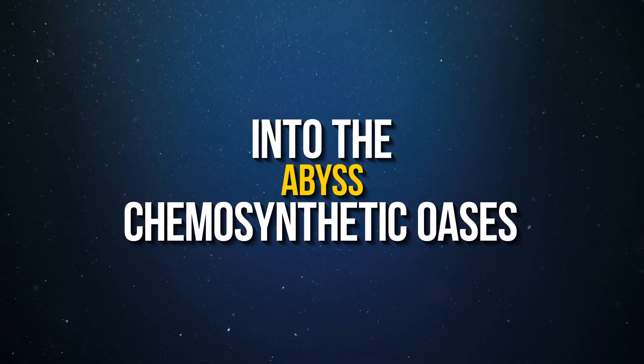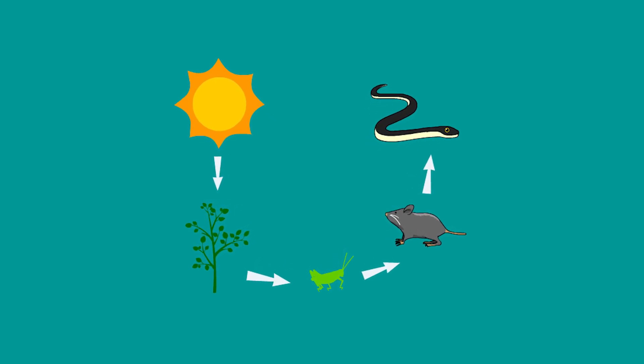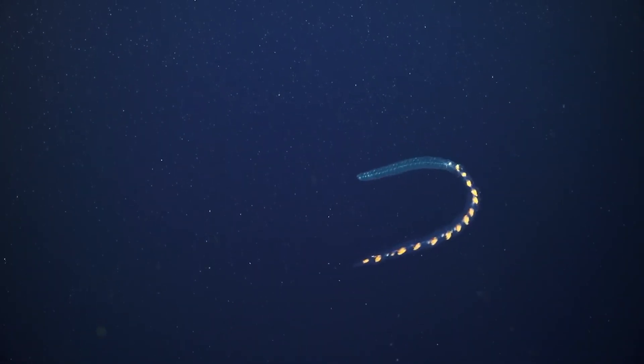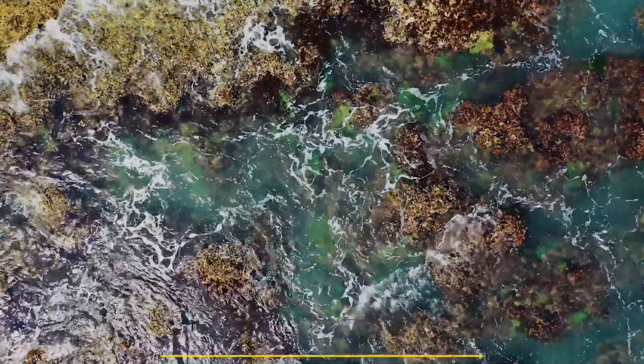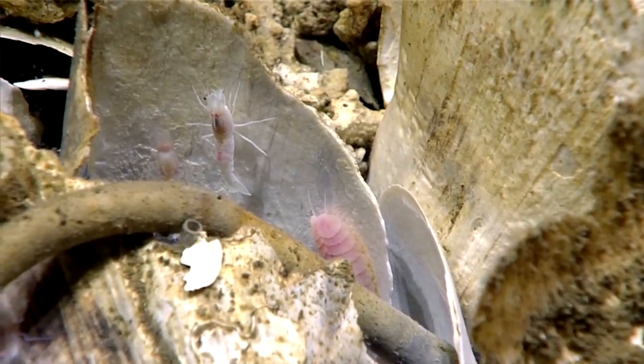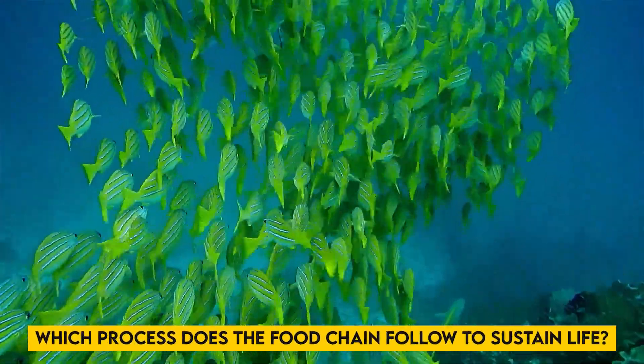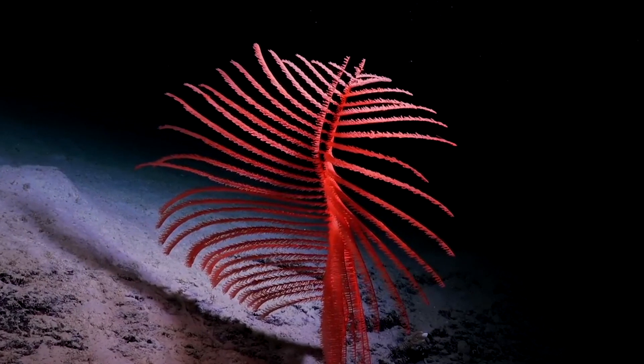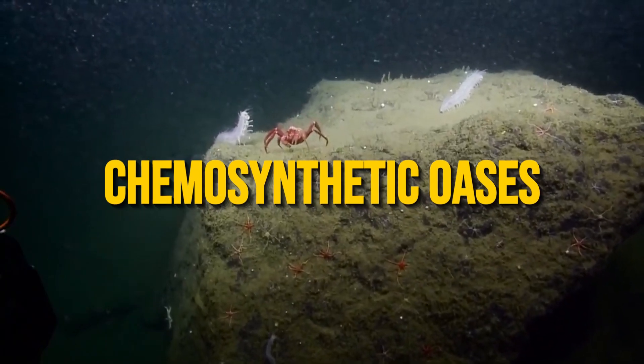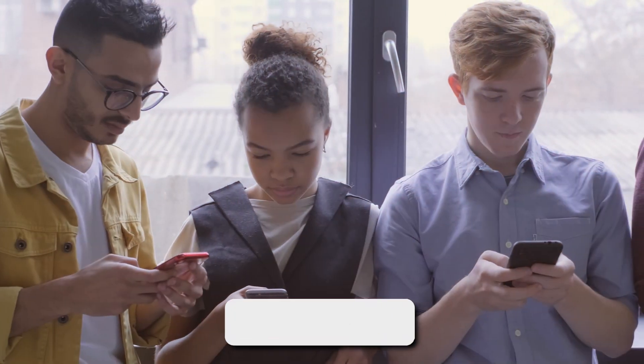Into the abyss: chemosynthetic oases. A food chain centered on sunlight supports the bulk of life on Earth. However, below 200 meters, light naturally stops existing in the deep water. Therefore, the deep ocean is devoid of any flora and has a food chain that runs entirely autonomously. Into the abyss, which process does the food chain follow to sustain life? In this video, we'll talk about chemosynthetic oases that you'd find deep into the abyss.